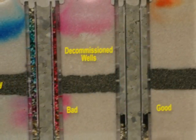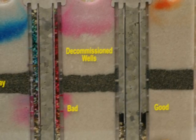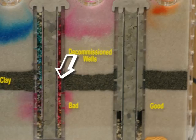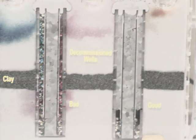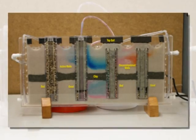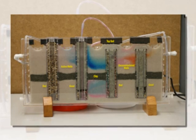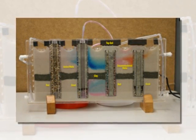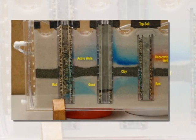Notice the well that was decommissioned following current standards. Contaminants enter the well annulus and move down the annulus, past the confining layer, into the deep confined aquifer. The deep confined aquifer is now contaminated, and all other wells drawing water from the confined aquifer are at risk. As we continue to pump the active well, contaminants enter the well screen. The water is now contaminated.